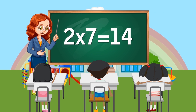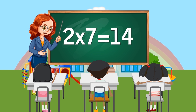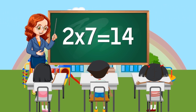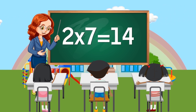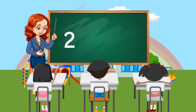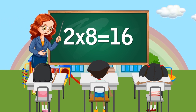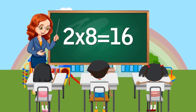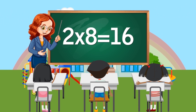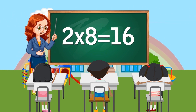Two times six equals twelve. Two times seven equals fourteen. Two times eight equals sixteen.